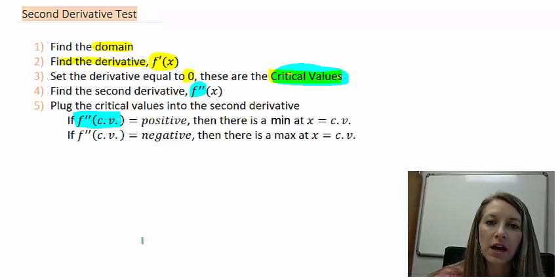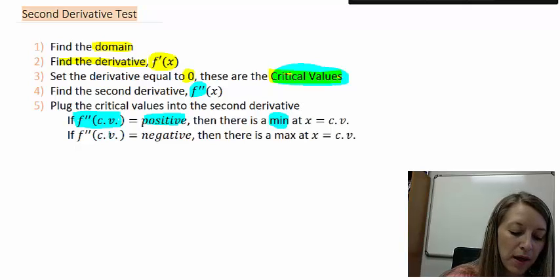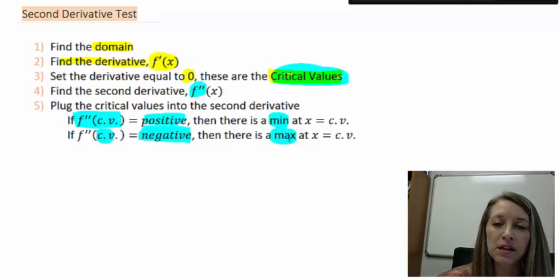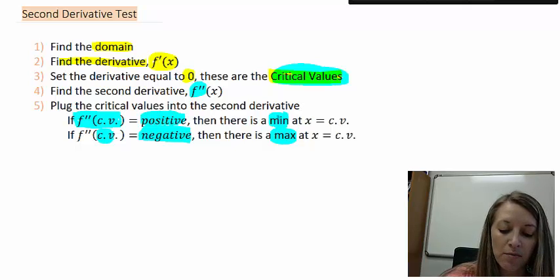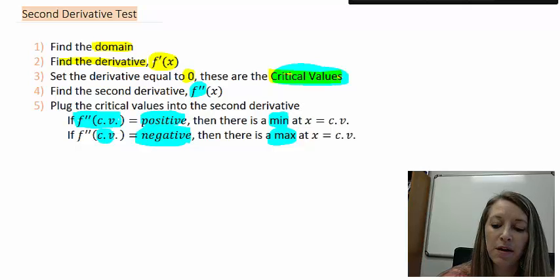We don't necessarily care what number we get out, but we care about what sign it is. If it comes out to be a positive number, that tells us we have a minimum at that critical value. If we plug in our critical value and it comes out to be a negative number, then that tells us we have a maximum at that critical value. It might be a little bit opposite of what you think — you probably think positive max and negative min. It's opposite: positive gives a minimum, negative gives a maximum. Let's look at some images to help us understand this further.